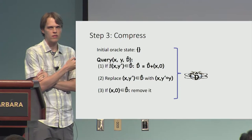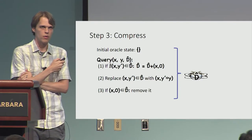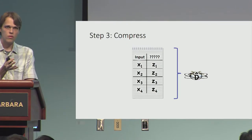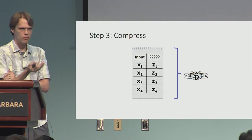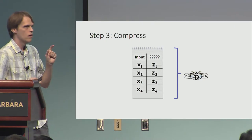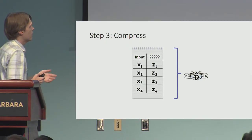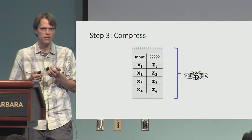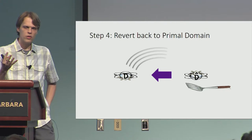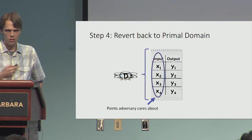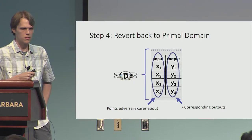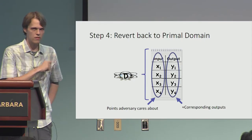This is very simple to write down — what the update procedure is for this compressed version of our oracle. It looks like we've made progress: the oracle's state is now a database of input-output pairs, and the inputs correspond exactly to the adversary's queries — at least some subset thereof. The problem is that the outputs are these weird Fourier coefficients that don't really correspond to outputs of the oracle. So all we do then is after this compression, we revert back to the primal domain. Now things are looking pretty good: the input still remains the points the adversary queried, and the output is approximately the corresponding outputs of the oracle — there's a caveat I'll get to in a couple of slides.